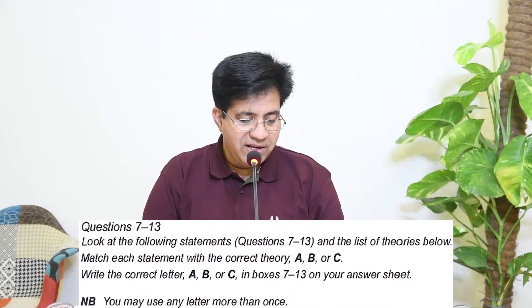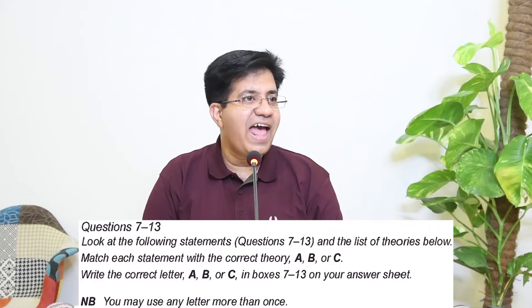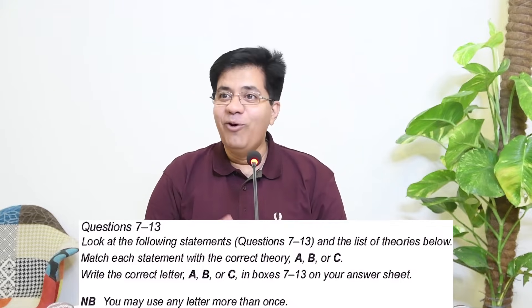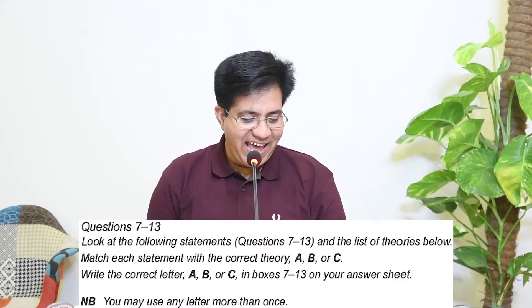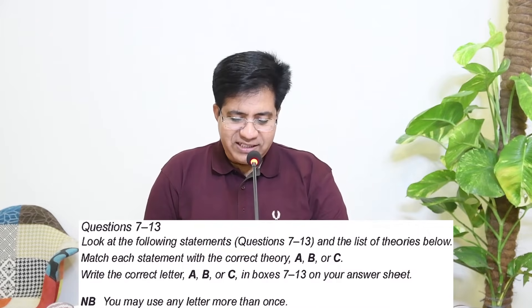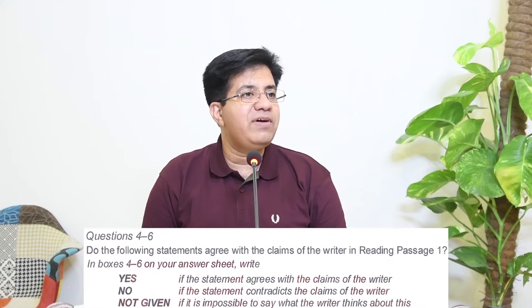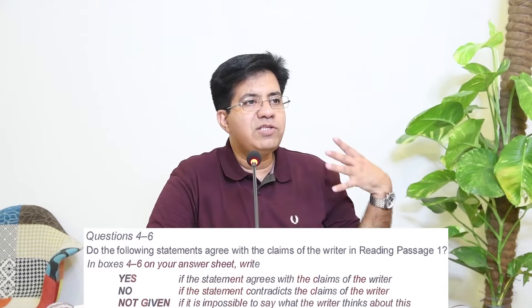Questions 4 to 6 are Yes/No/Not Given, and questions 7 to 13 are matching. Let's start with questions 4, 5, and 6 — Yes/No/Not Given. They are Type A, so questions and answers are in order. Do you know the difference between True/False/Not Given and Yes/No/Not Given?